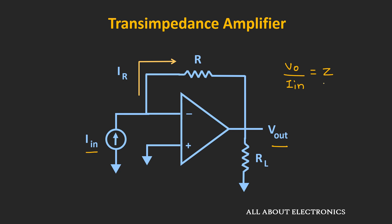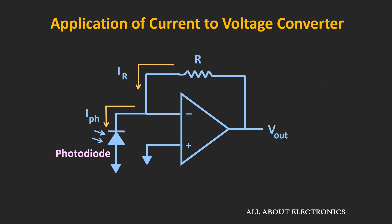Let's see some applications of this current-to-voltage converter. It is particularly useful in photodiode circuits. The photodiode is connected at the inverting input terminal of the op-amp, and the non-inverting terminal is at ground. By the virtual ground concept, the inverting terminal is also at ground. Depending upon the light falling on the photodiode, a photocurrent flows. Applying KCL, the photocurrent IpH equals the current IR through resistor R, which equals Vout divided by R. So the output voltage Vout equals IpH × R, converting the photocurrent into an output voltage.